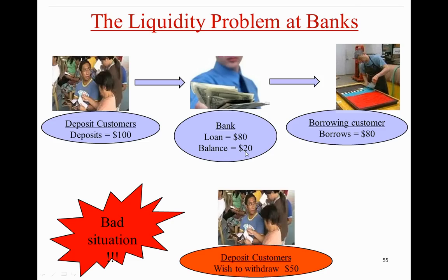For example, deposit customers may open an account today with $100, and the bank may lend $80 of that $100, leaving only $20 in cash to meet future payout obligations to depositors. But what if deposit customers come in tomorrow and ask to withdraw half of their initial deposits of $100? This is the liquidity problem — the bank has only $20 left after lending $80, so even with 100% performing loans, the bank is in dire straits due to the maturity mismatch between its loan assets and its deposit liabilities.